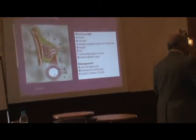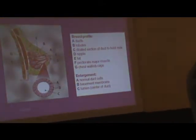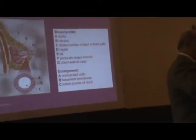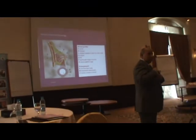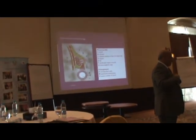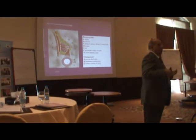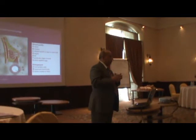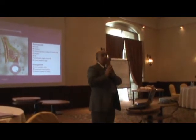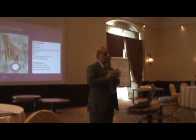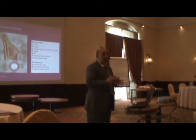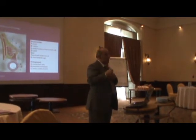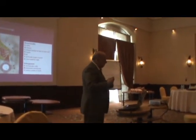The breast has anatomical boundaries which extend from the second rib to the sixth rib, and extending from the edge of the sternum to the mid-axillary line. This area we call the breast area, and the protruded part within the breast area is called the breast mound. There is a difference between the breast area and the breast mound. What we need to examine is the breast area containing the breast mound, rather than examination of the breast mound itself.